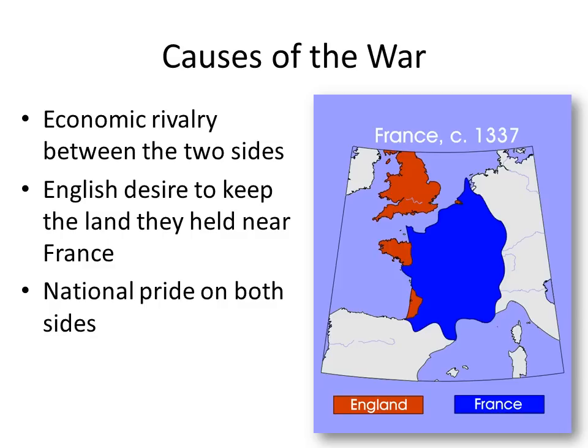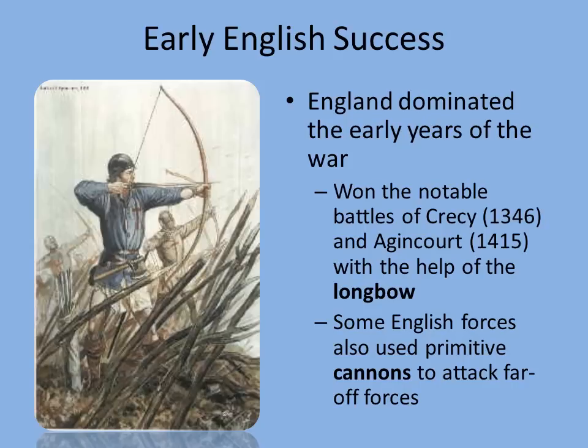England, on the other hand, actually wanted to go further and have what they called a continental empire — land all over mainland Europe in addition to the island of Great Britain. So you have two conflicting sides, and it comes to a head in 1337 when they begin fighting each other for this land in France.